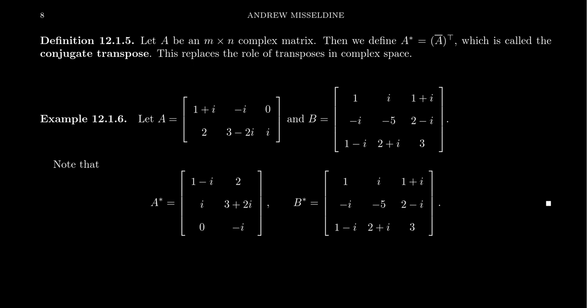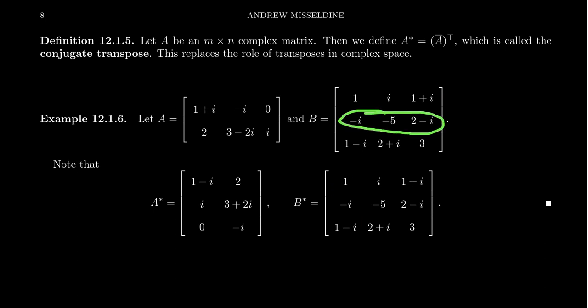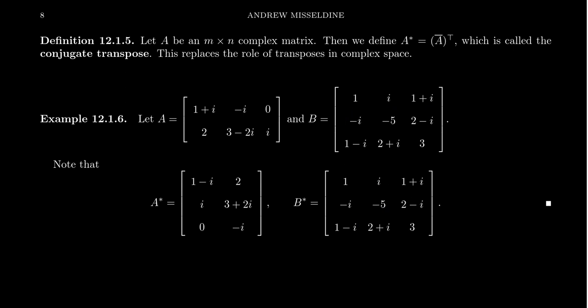For a 3×3 complex matrix B, we take B* by turning rows into columns and taking conjugates. The first row becomes the first column: giving 1, −i, 1−i. The second row becomes the second column: giving +i, −5, and 2+i. Notice the sign of the real part doesn't change. The third row becomes the third column: the conjugate of 1−i becomes 1+i, 2−i becomes 2+i — excuse me, becomes 2−i — and the conjugate of 3 stays 3, since it's a real number.